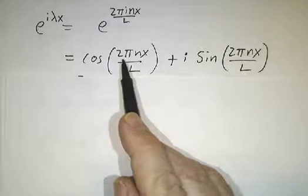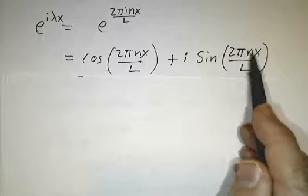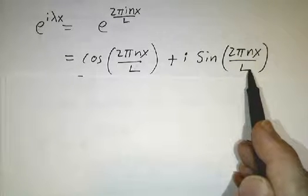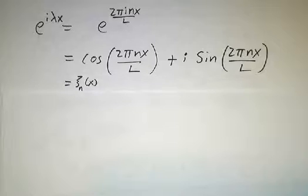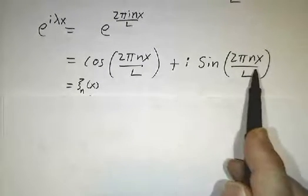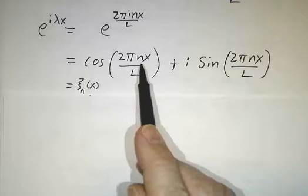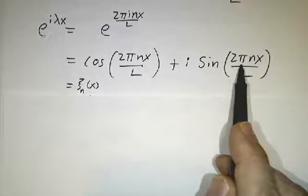And we've seen these functions before. We already saw cos of 2π nx over L and sin of 2π nx over L when we were diagonalizing the second derivative. Here they come in a particular combination, cos plus i sin. And if you look at the minus n eigenfunction, you get cos minus i sin.